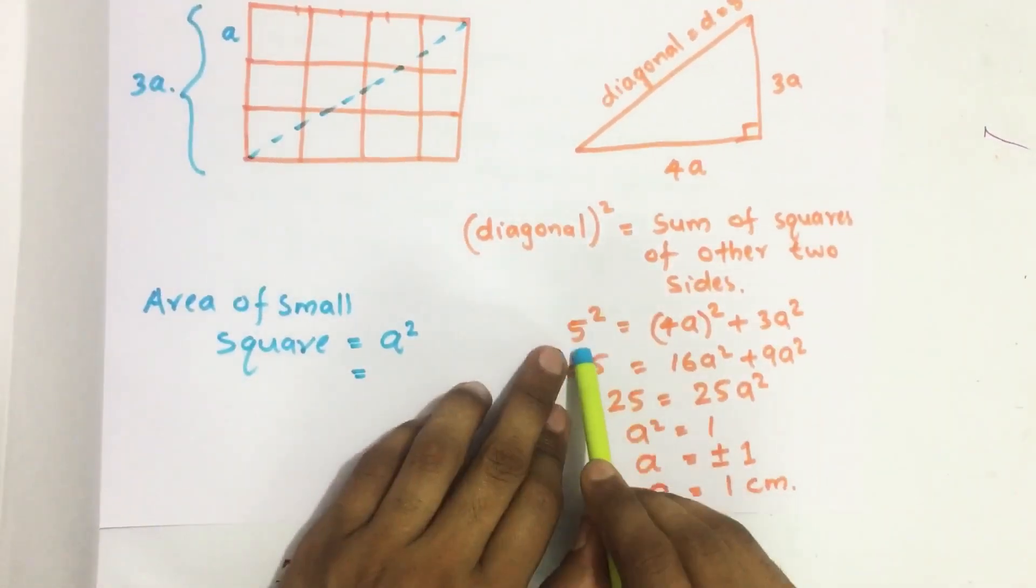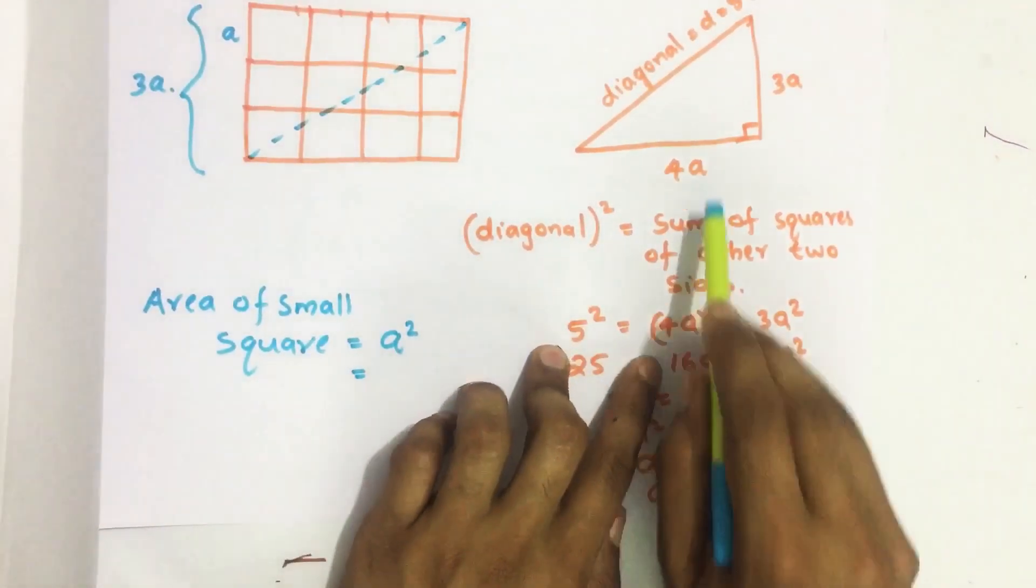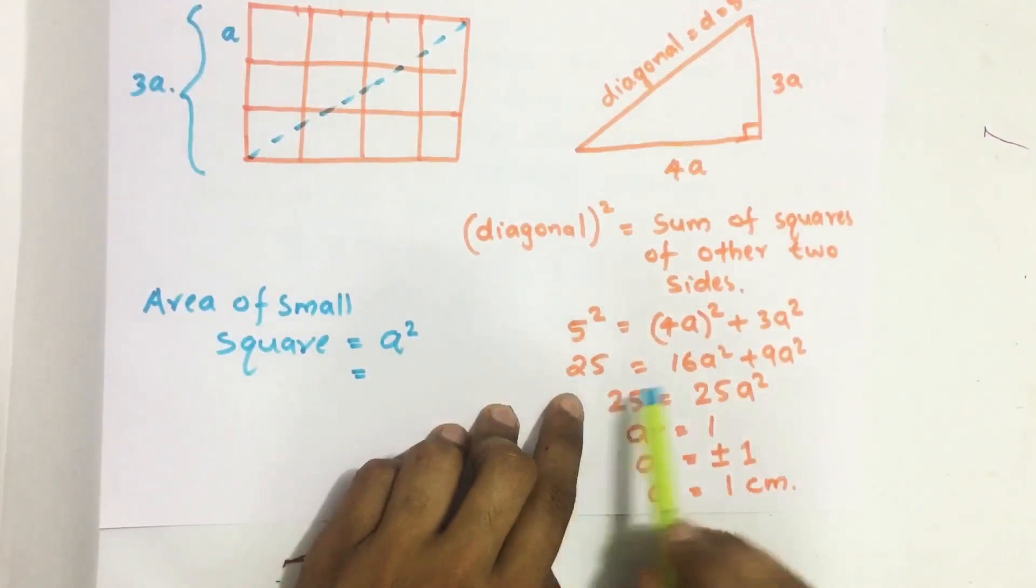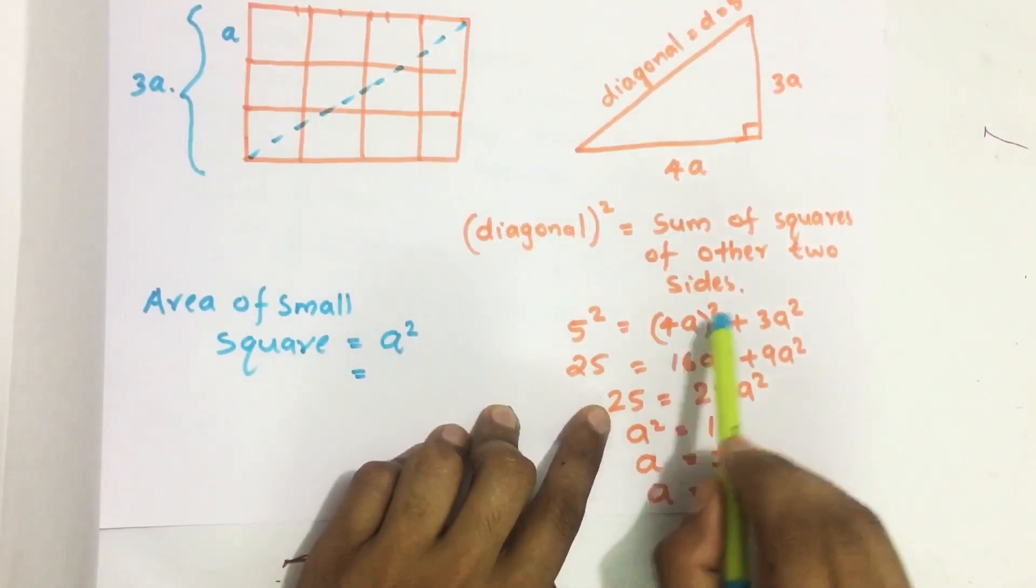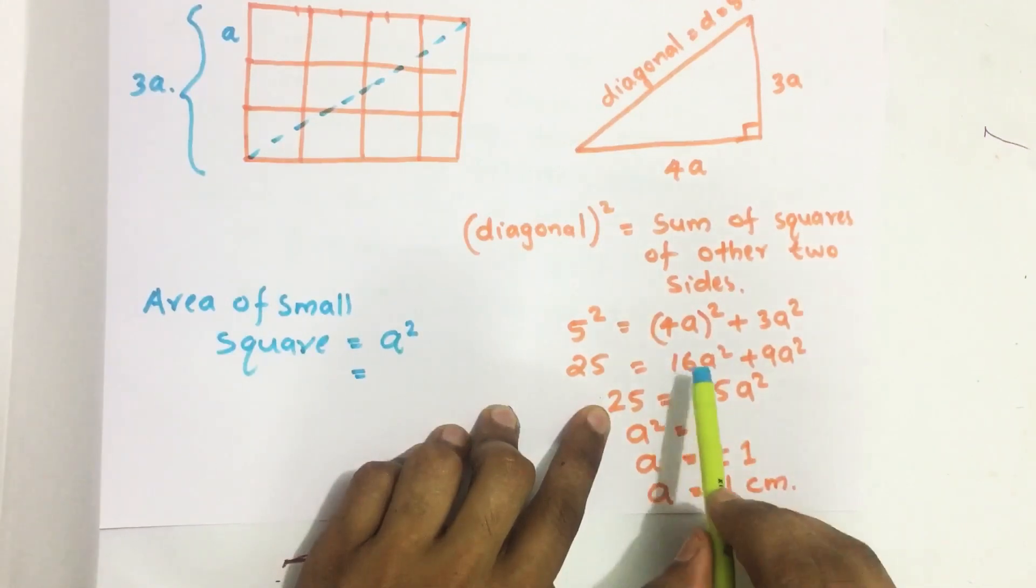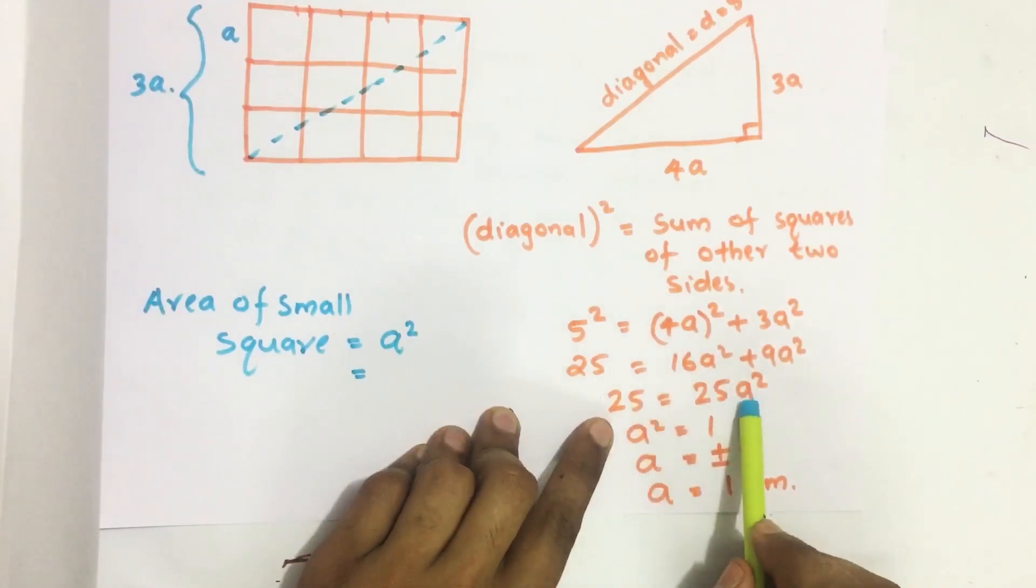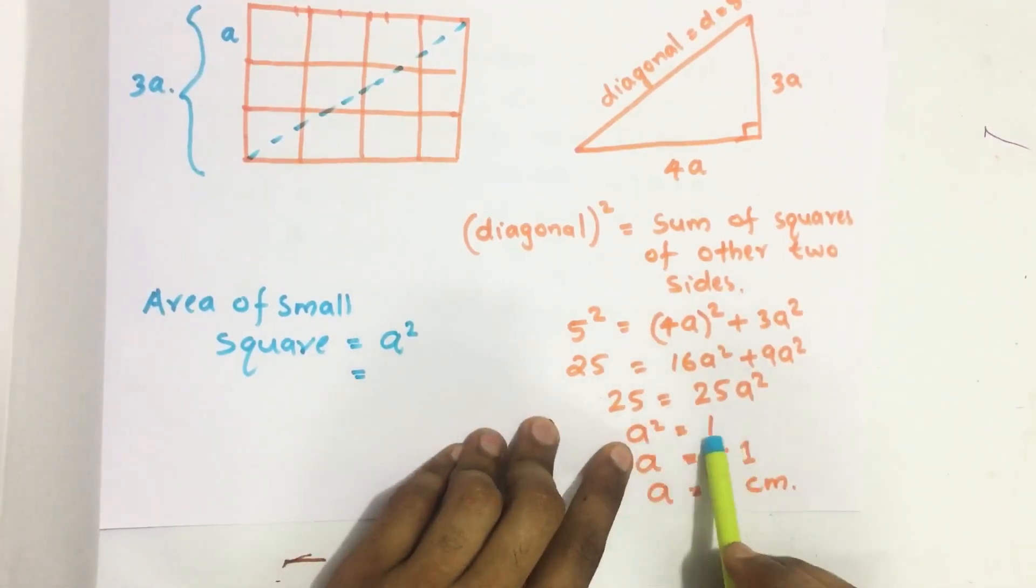So here diagonal equals 5, so 5² = (4A)² + (3A)². 5² = 25. Then (4A)² = 16A² and (3A)² = 9A². So we get 25 = 25A². Therefore A² = 1.